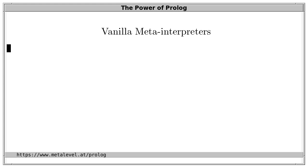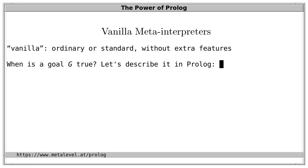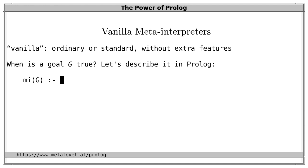We start with vanilla meta-interpreters — vanilla in the sense of ordinary or standard, without extra features. When is a goal G true? Let's describe it in Prolog, because Prolog code is an executable specification. Let's introduce a predicate 'mi' for meta-interpreter and describe the conditions that make mi hold for a goal G. We want mi(Goal) to be true if and only if Goal holds. Simply say: 'mi(G) holds if G holds.' That's undisputably correct, but it's simply a meta-call delegating everything to the Prolog engine.